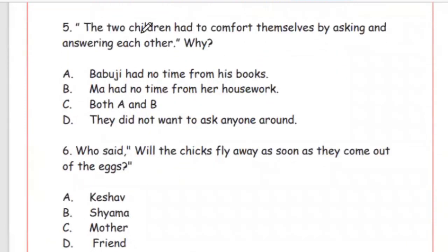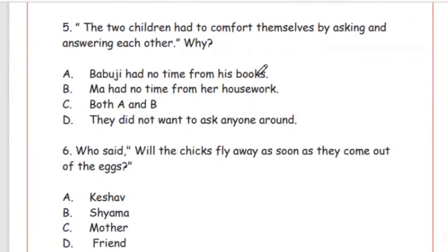Question 5: The two children had to comfort themselves by asking and answering each other. Why? Option A: Babuji had no time from his books. Option B: Maa had no time from her housework. Option C: both A and B. Option D: they did not want to ask anyone around. In the chapter we saw that neither Babuji nor Maa had free time, so the right answer is Option C, both A and B.